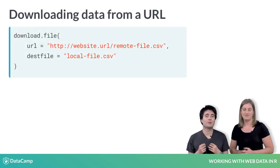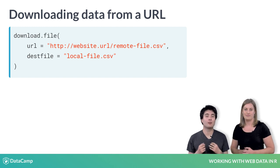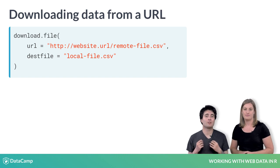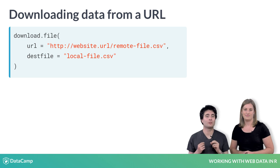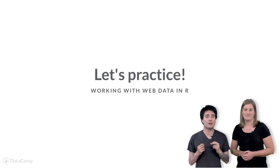Since downloading data from the internet every time that you want to use it can be very slow and tedious, especially for large datasets, R provides the function download.file to copy internet-based files to your machine. This takes two arguments: the URL, where the file lives, and a path to somewhere on your local file system that you want to download the data to. Now, let's try some examples.